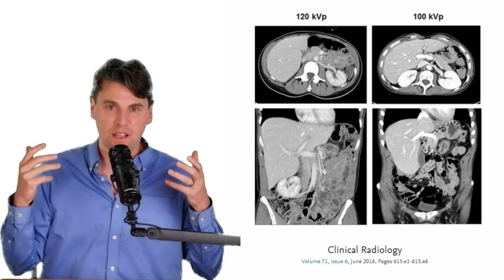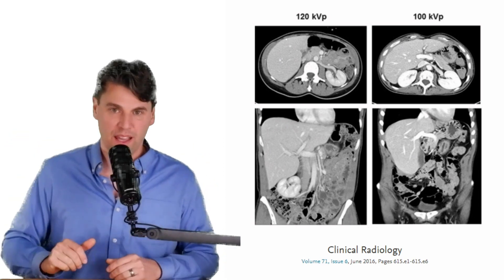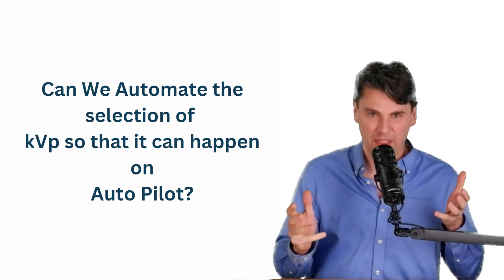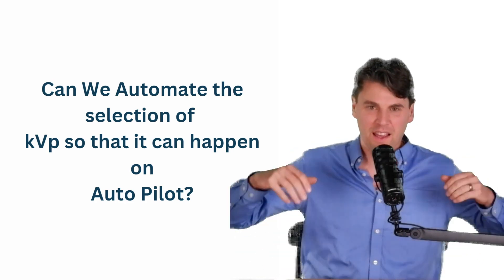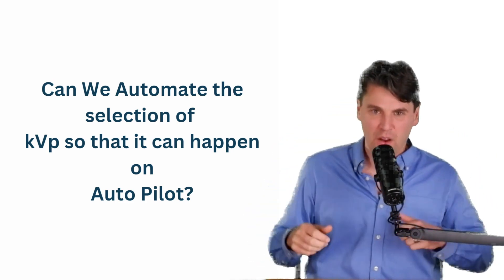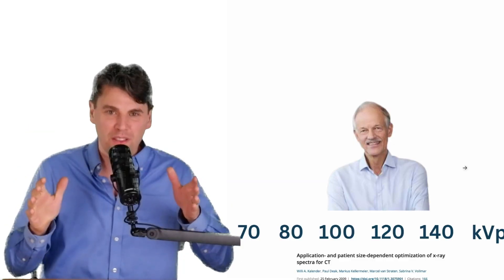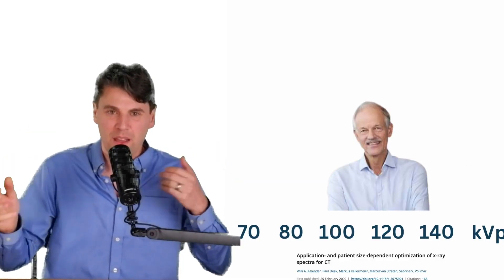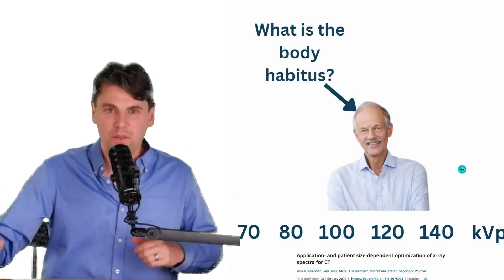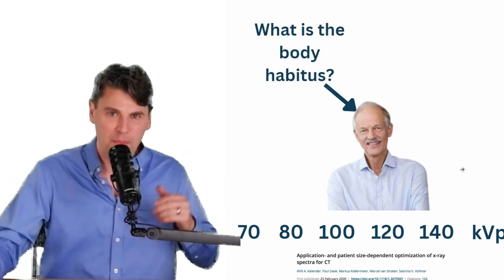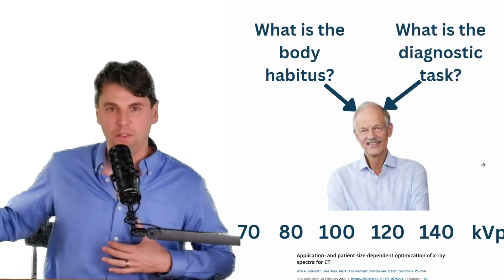We want a method to actually help pick what the KVP is going to be on the actual scanner itself. We don't want to have to have a really complicated method where we're going to have to go in there and measure something physically, and do some calculations and compute in your head what's going to happen. We want something to happen on autopilot. If you go to this guy here, this is Willie Callender. If you go to him, and you give him a couple pieces of information, you say, what's the body habitus of the patient?